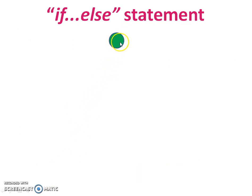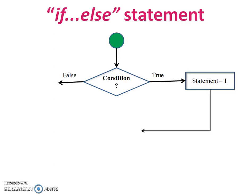The flowchart starts here with a condition shown in a diamond shape. There are two options: one is true, one is false. If condition is true, statement one will be executed. If the condition is false, then statement two will be executed.